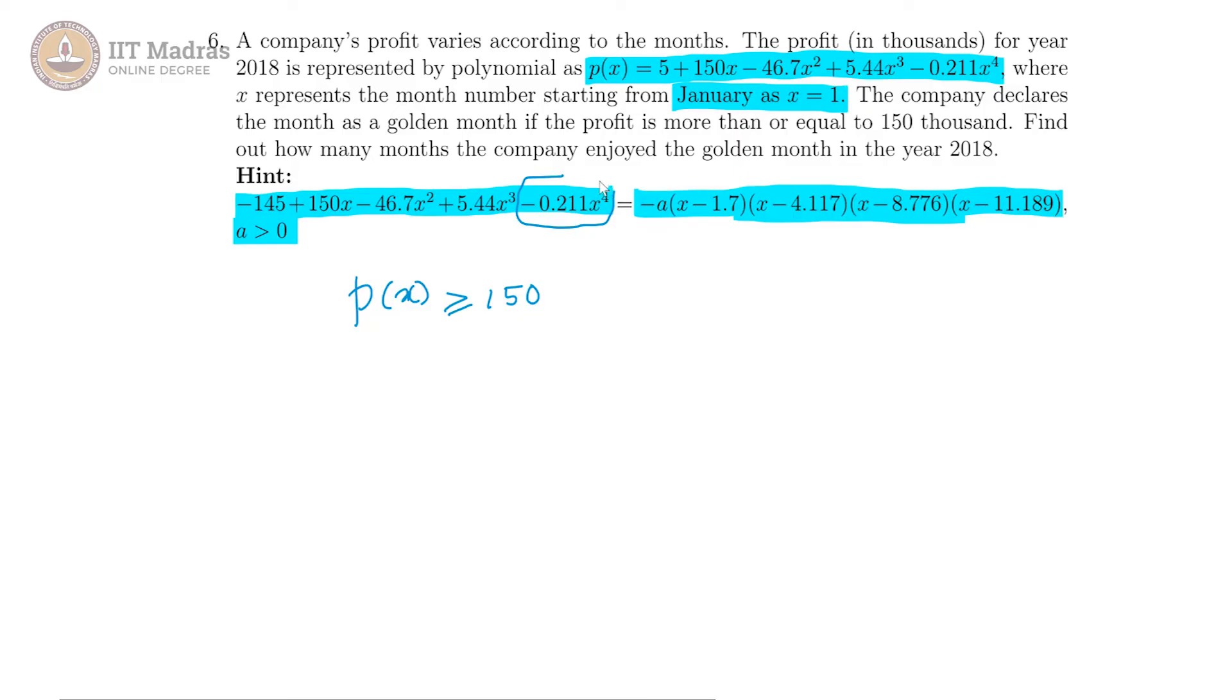Because that is the coefficient of x power 4 here and minus a will be the coefficient of x power 4 in the RHS. Therefore a has to be equal to 0.211, minus a is equal to minus 0.211. Therefore a is equal to 0.211.